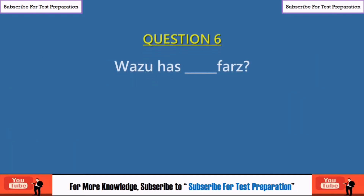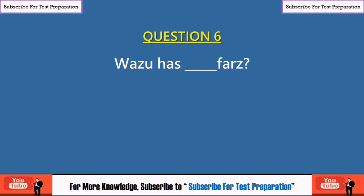Question 6: Wuzu has how many farz? 2, 4, 6, or 3? The right answer is 4.